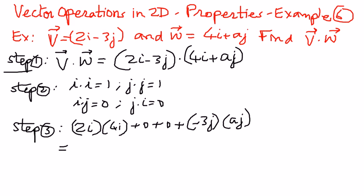When we simplify this, 2 times 4 is 8, and i dot i is 1. Then j dot j is 1, so this becomes negative 3a. Therefore, our answer is 8 minus 3a.